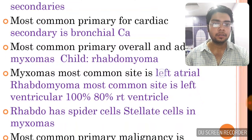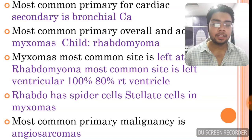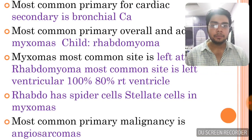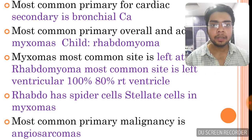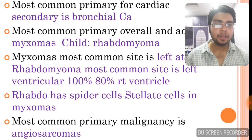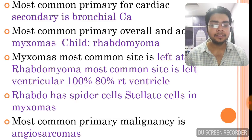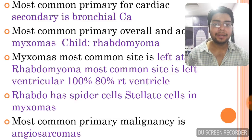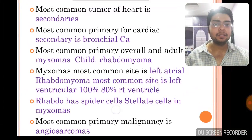The most common site for myxoma is the left atrium. For rhabdomyoma, which is the most common primary cardiac tumor in children, the most common site is the left ventricle. Rhabdomyoma has spider cells while myxomas have stellate cells — do see their pictures. The most common primary malignancy of the heart is angiosarcoma.